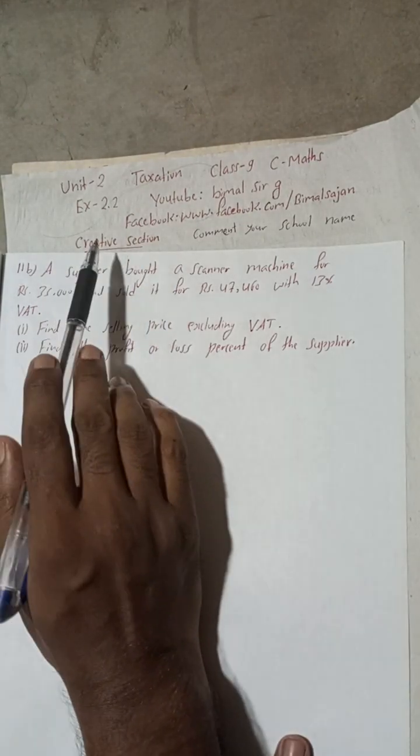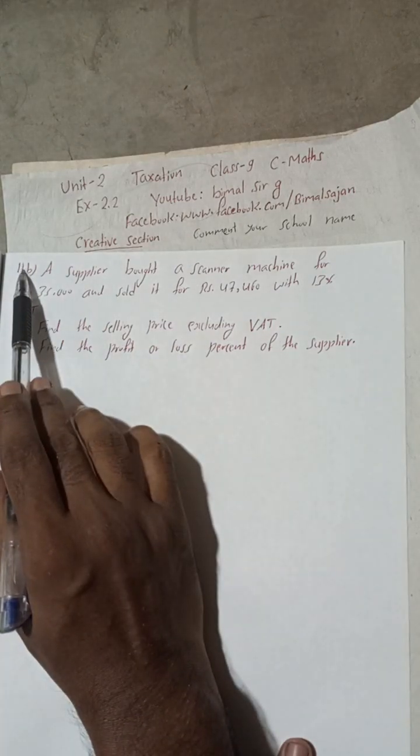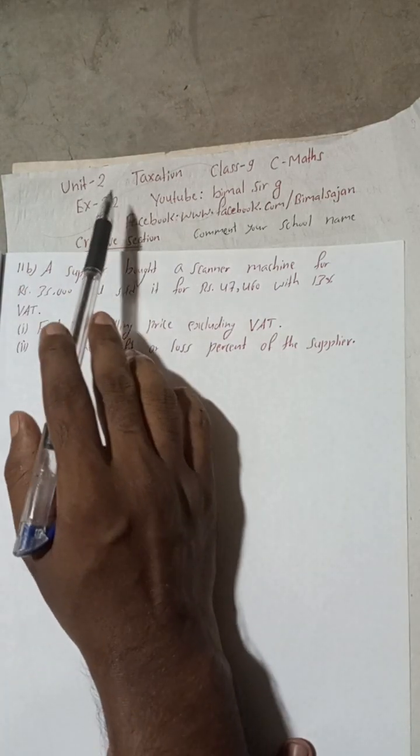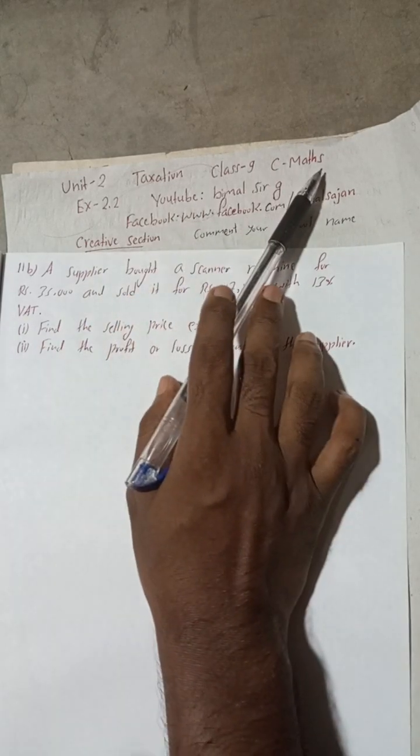Hi class 9 and 10 students, welcome back to Bimalsarji YouTube channel. This is question number 11b of creative section, exercise 2.2, unit 2 taxation, class 9 compulsory maths.